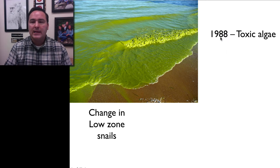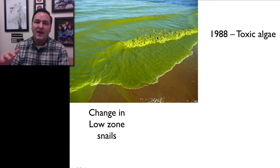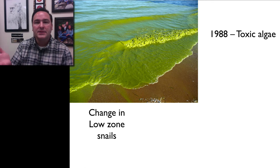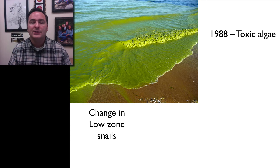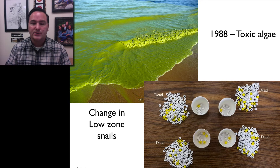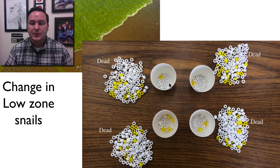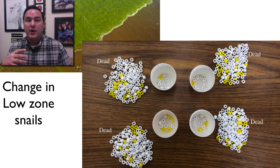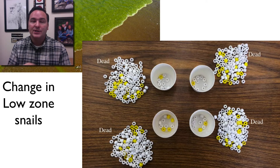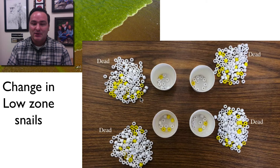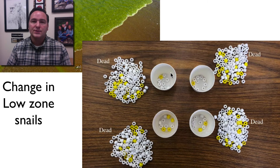In 1988 — and this really happened — there was a toxic algae in the water that affected, for the most part, the low zone snails. The mid zone and high zone snails were out of the water long enough that this toxic algae didn't really affect them. There was a huge reduction in population size, going from the cups being almost full down to very few individuals per cup. The toxic algae killed indiscriminately — it didn't matter whether snails had more yellow or white alleles — and more than 90% of the entire population was lost, leaving only random samples of the original population.